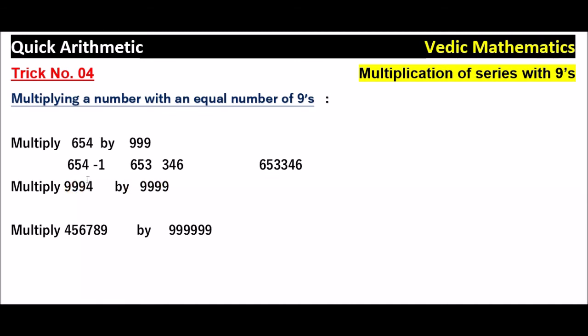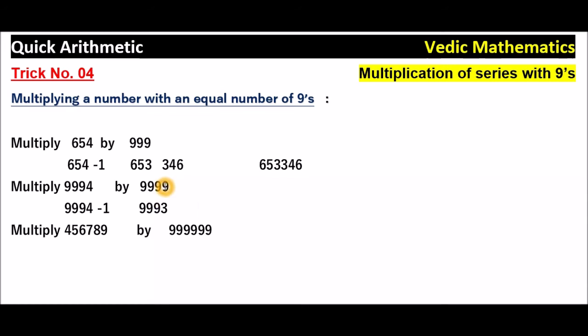Coming to multiply 9994 by 9999. What is the first step? Subtract 1 from the given number. So 9994 minus 1 is 9993. Once after getting 9993, subtract from 9999.